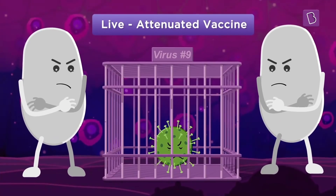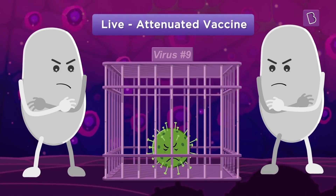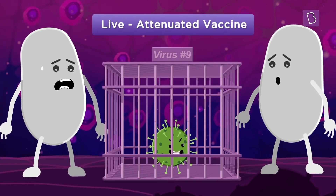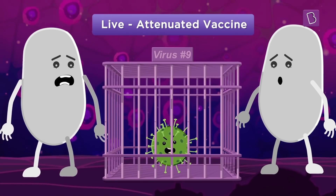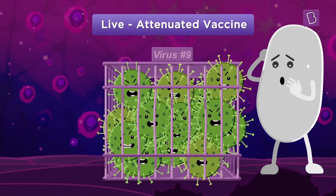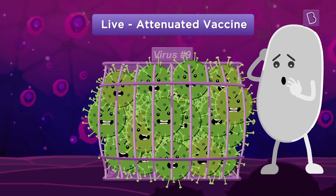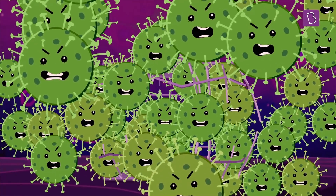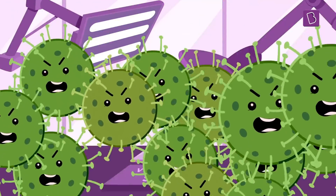This type of vaccine is called the live attenuated vaccine. Since this vaccine uses the whole pathogen, there was still a tiny chance that the bacteria or virus could begin multiplying within the body. Therefore, it has to go through extensive testing before it can be injected into patients.